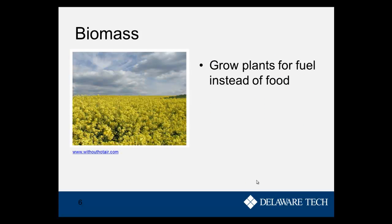The top left picture is biomass — plants grown for fuel instead of food. The most famous example is corn ethanol, though this appears to be a different plant. The idea is that biomass takes sunlight and converts it into carbohydrates in the plants, and then we can use those carbohydrates for fuel, either by burning the plants or converting them into liquid fuels like ethanol.